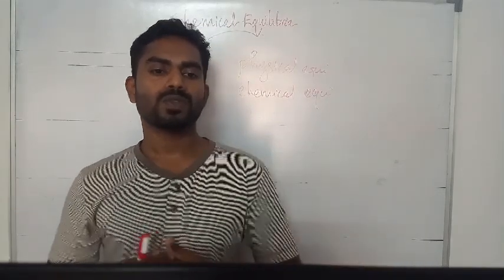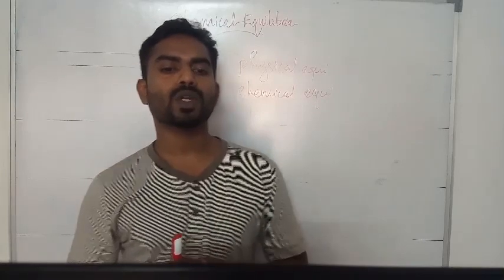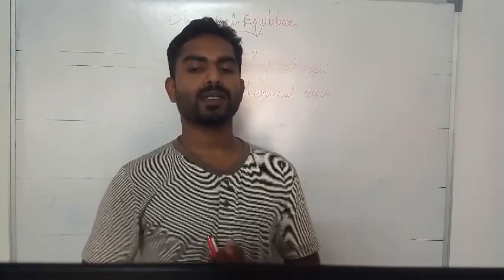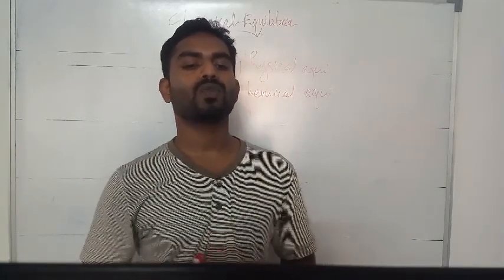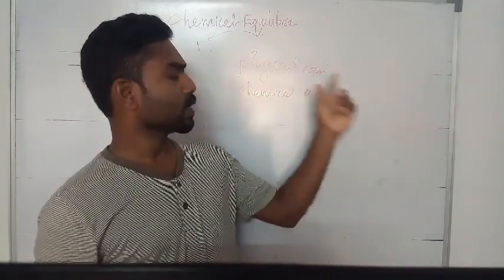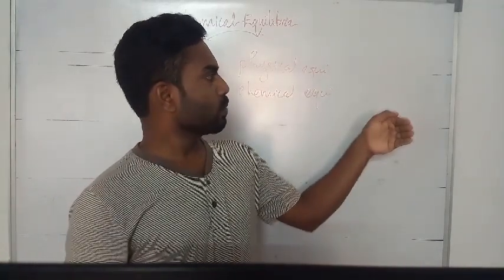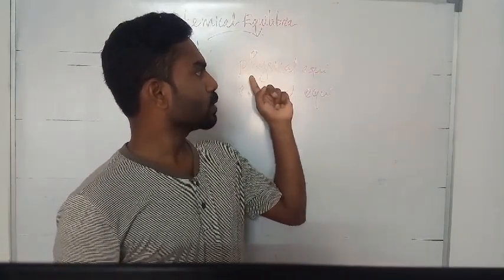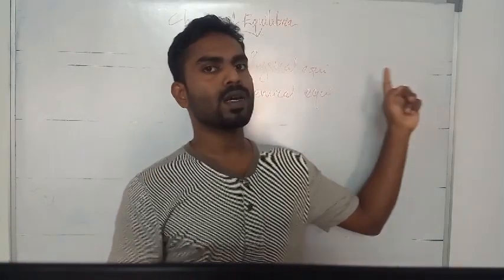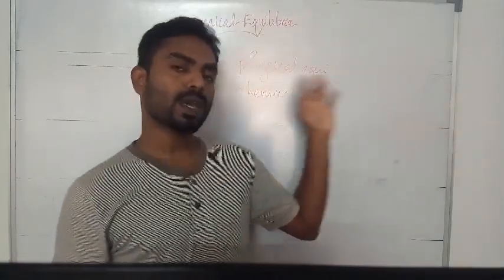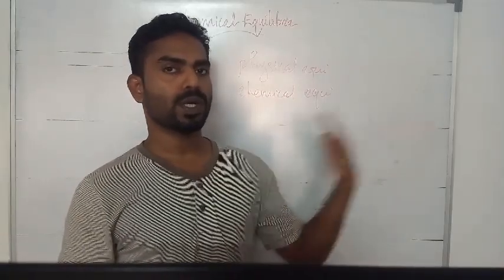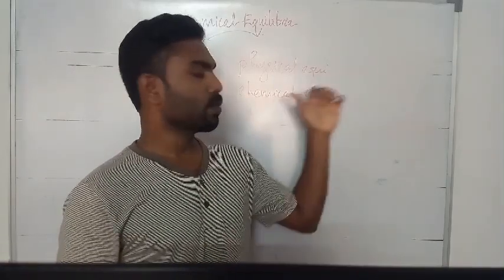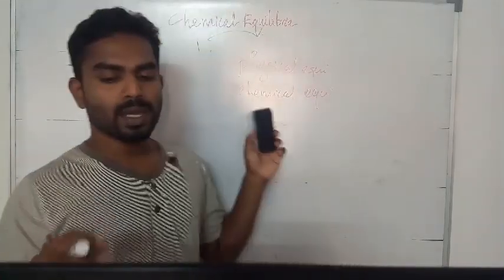If the opposing process involved in this dynamic state of equilibrium involves only changes in the physical state of matter, it is known as physical equilibrium. If we look at the chemical changes of matter, that is called chemical equilibrium.